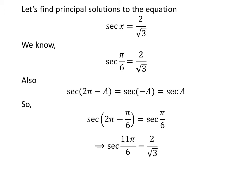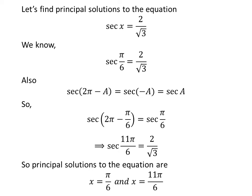As 2 times pi minus pi upon 6 is equal to 11 times pi upon 6, so secant of 11 times pi upon 6 is equal to 2 upon square root of 3. So the principal solutions to the equation secant of x is equal to 2 upon square root of 3 are pi upon 6 and 11 times pi upon 6.